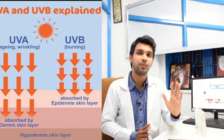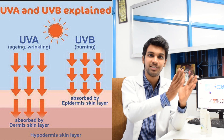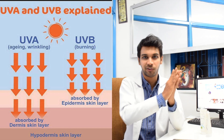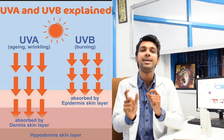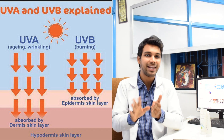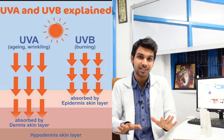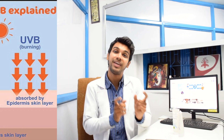UV-B sun rays जो हैं ये skin के ऊपरी superficial layer - epidermis - तक पहुँचकर sunburn, tanning, darkening, pigmentation जैसी problems करते हैं। एक simple trick से आप इसे समझ सकते हो: UV-A में A याने Aging - premature aging, wrinkles, loose skin। UV-B में B याने Burning - sunburn, tanning, darkening। इस तरह से आप UV-A और UV-B और उनके नुकसान समझ सकते हो।